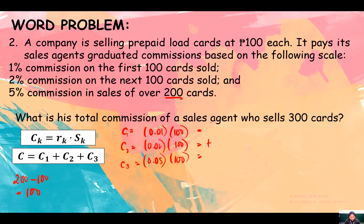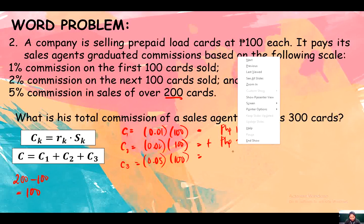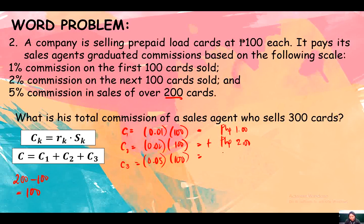0.01 times 100 is 1 peso. 0.02 times 100 is 2 pesos. 0.05 times 100 is 5 pesos. In total, he has 8 pesos commission.